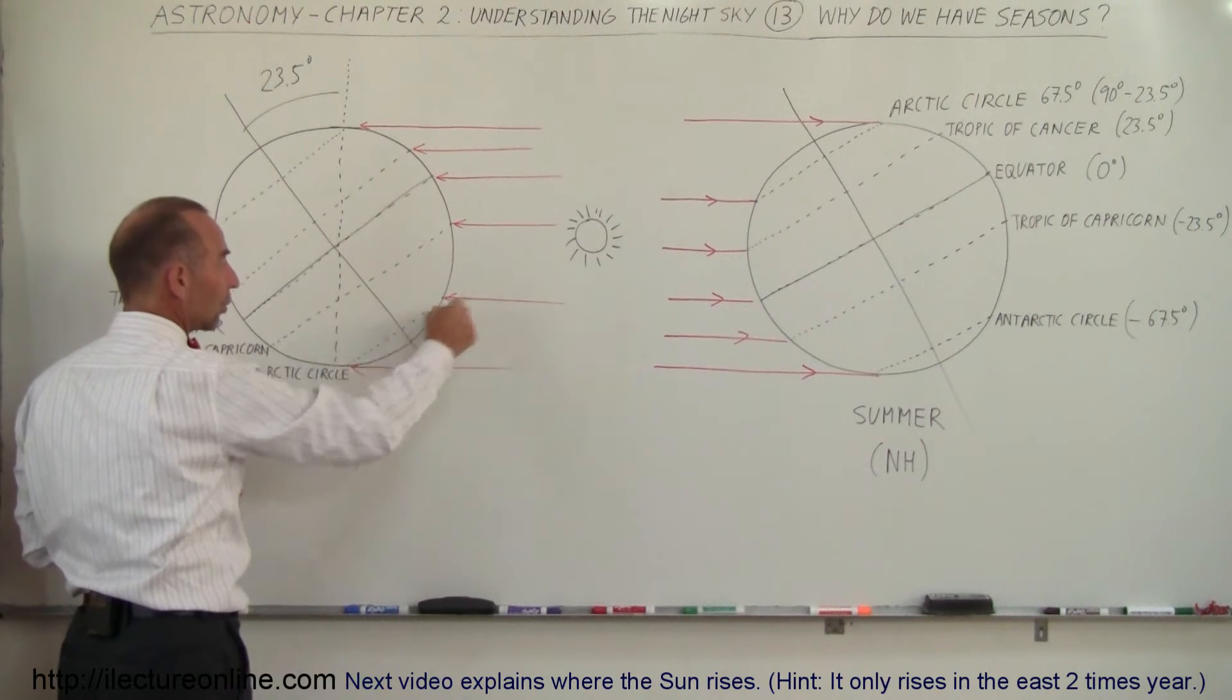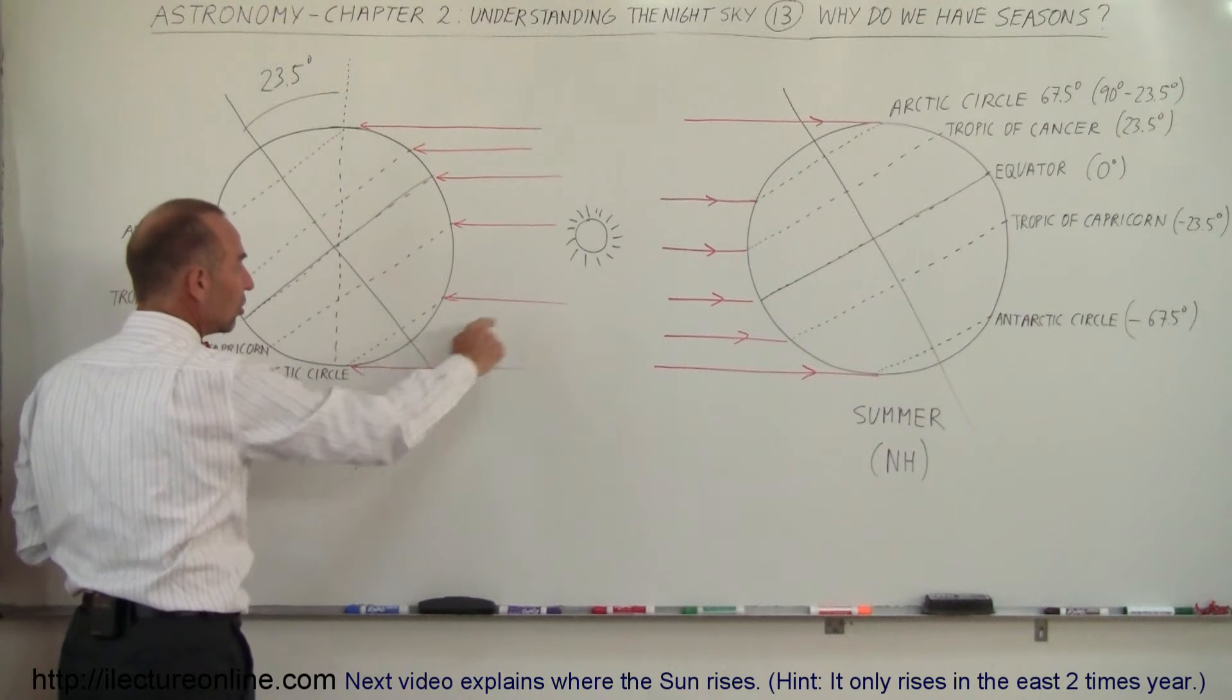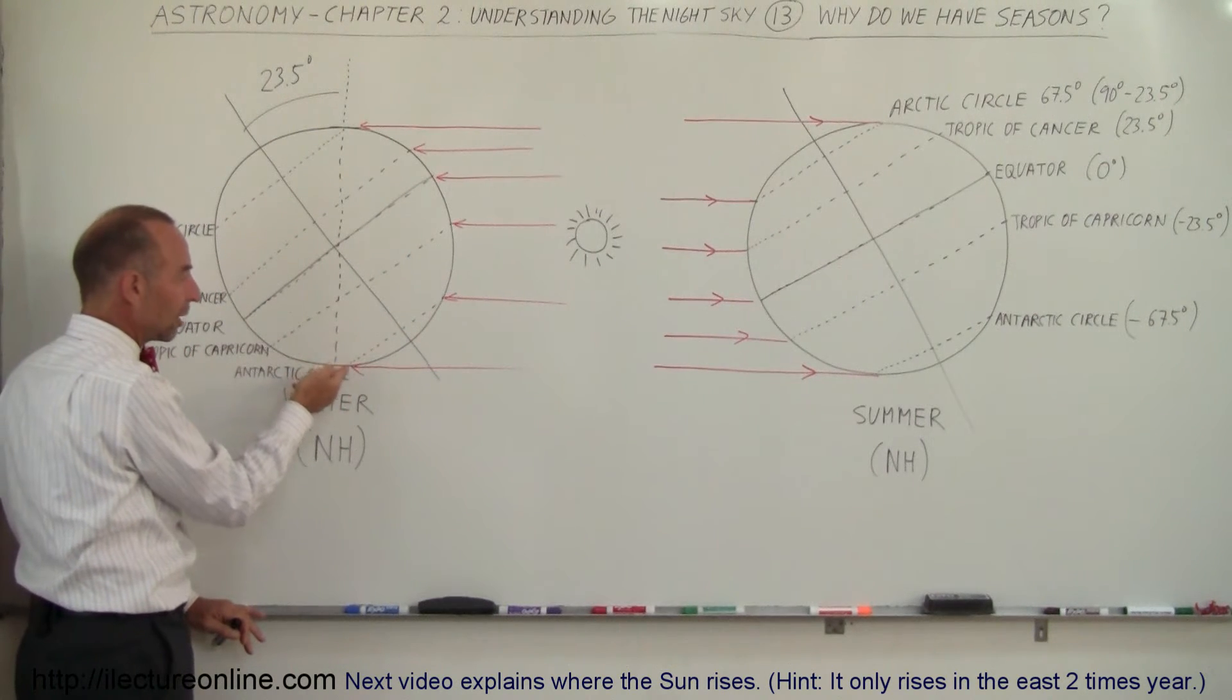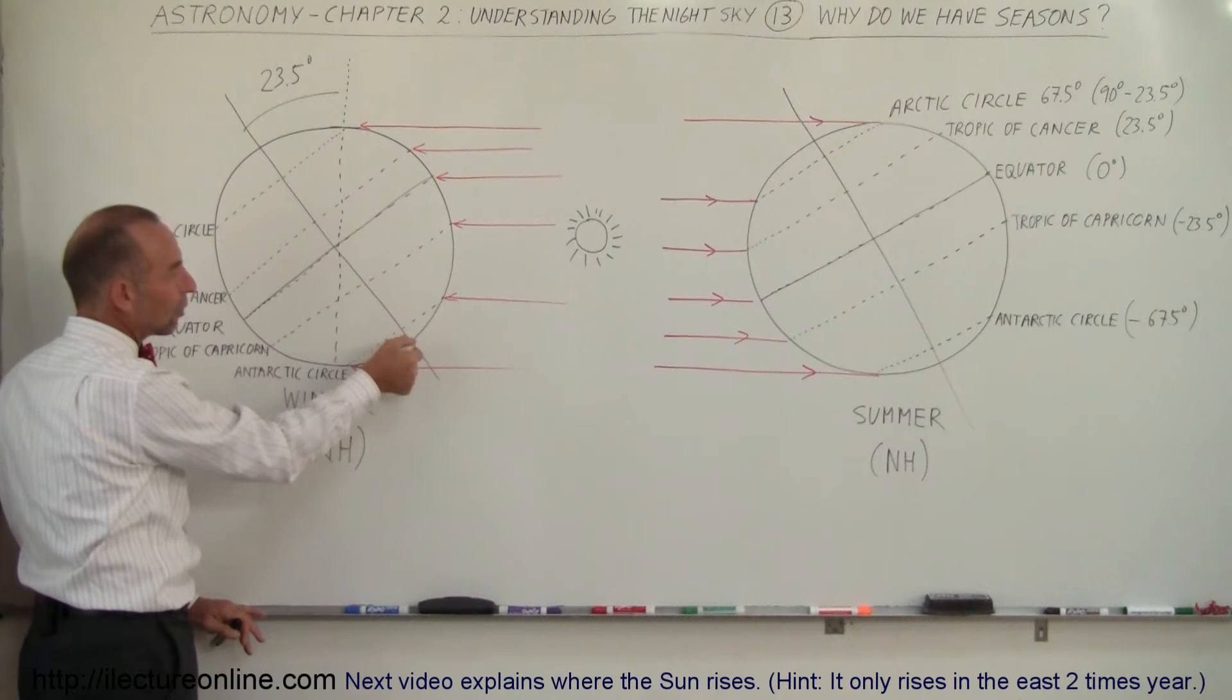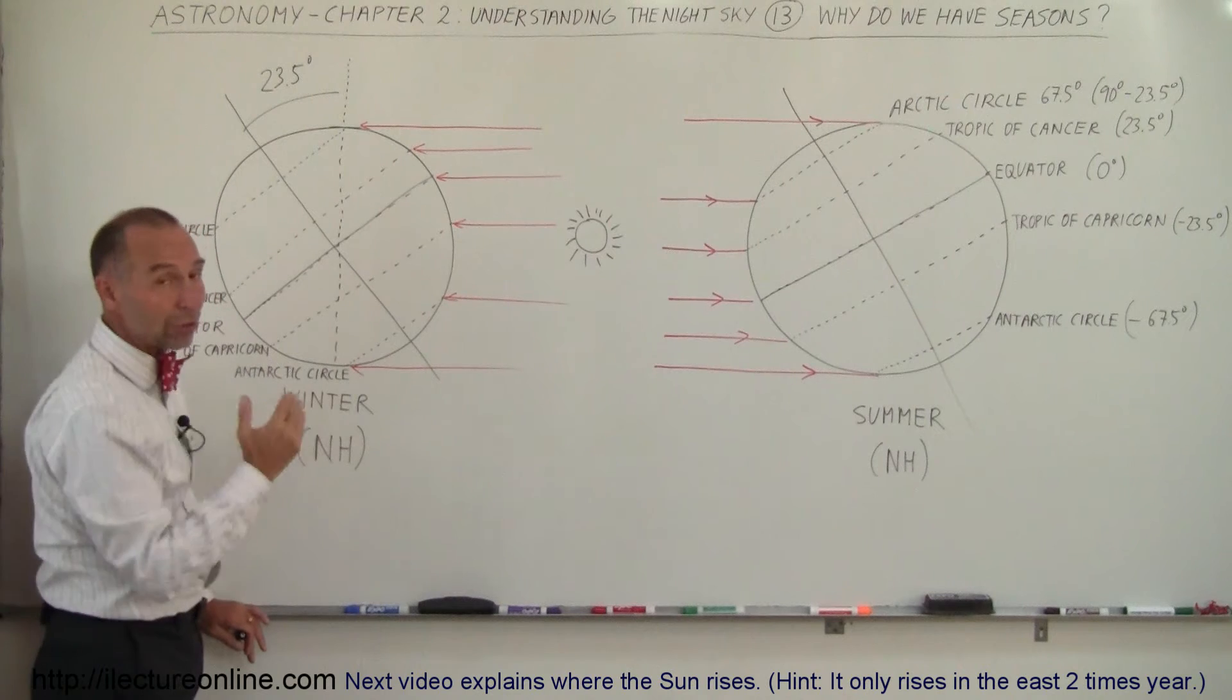Also notice here that the Antarctic Circle will still get a lot of sunshine and the entire South Pole region here all the way to the other side of the earth where the Antarctic Circle hits here which is 23.5 degrees below the pole or 67.5 degrees below the equator.